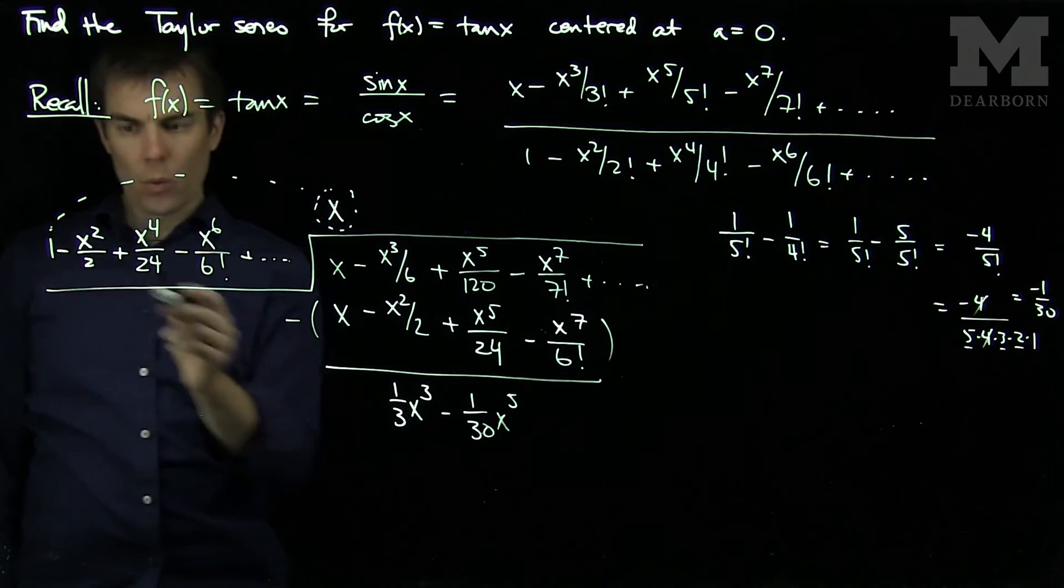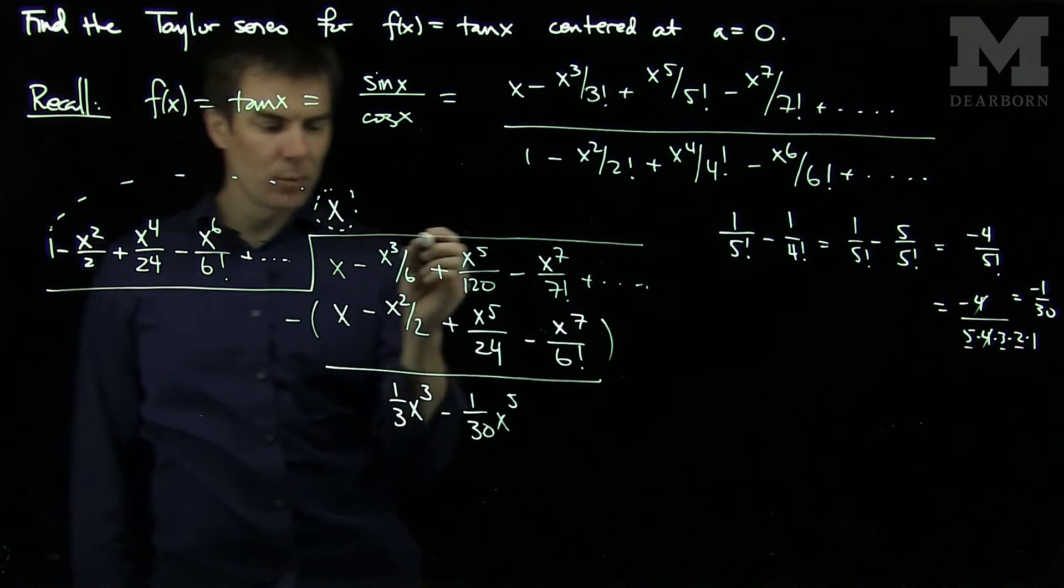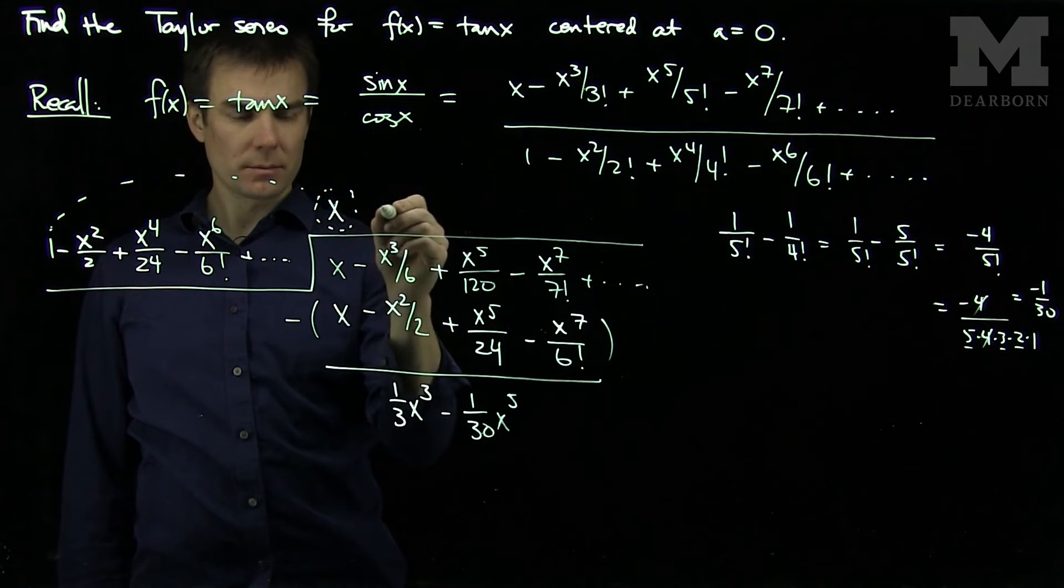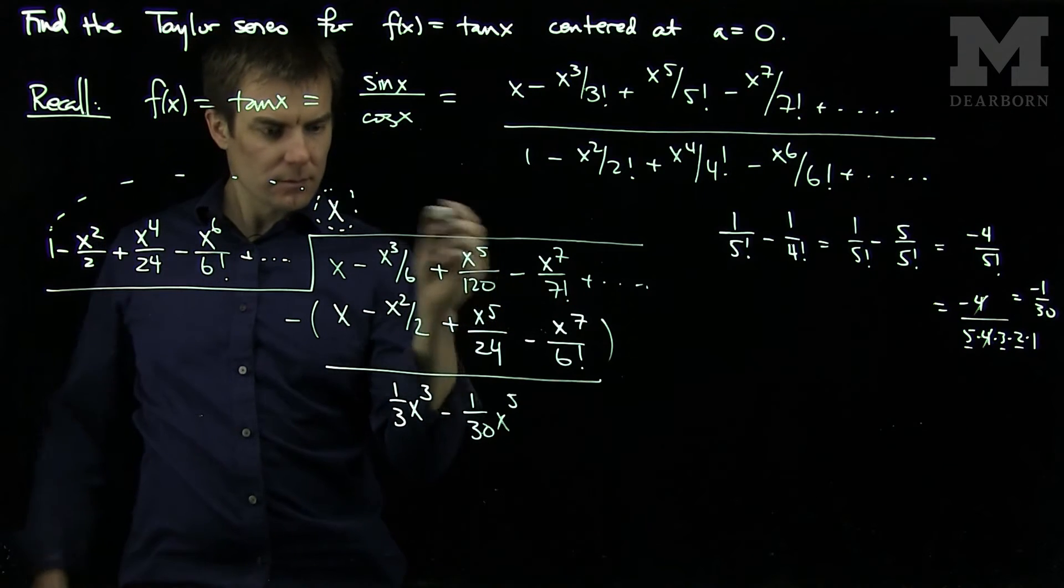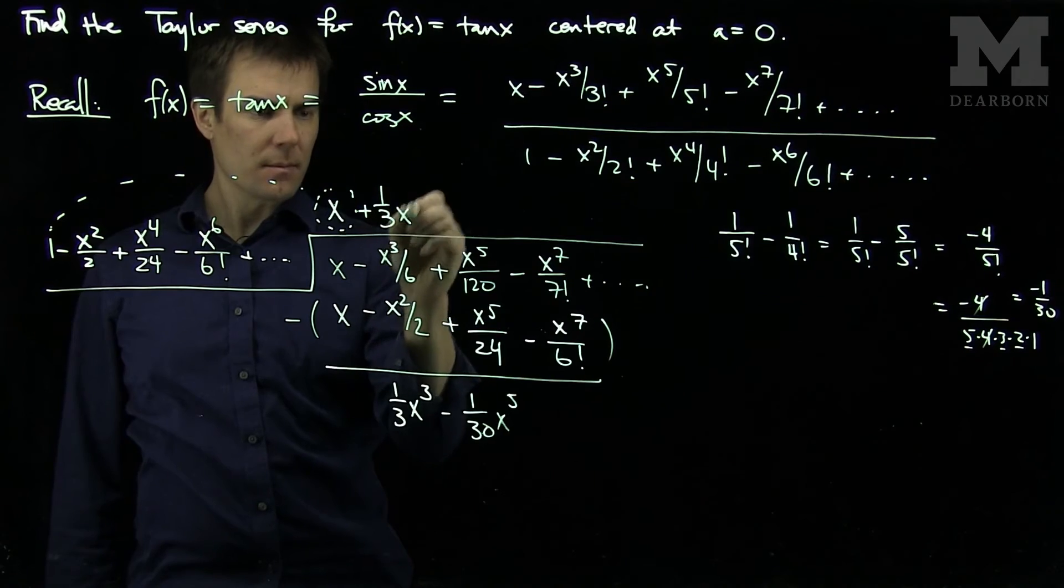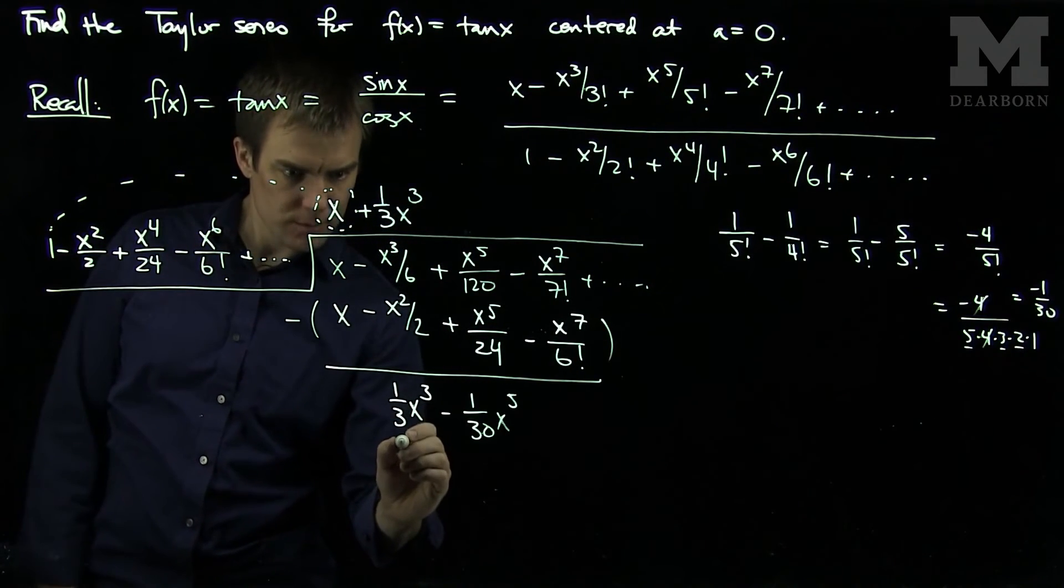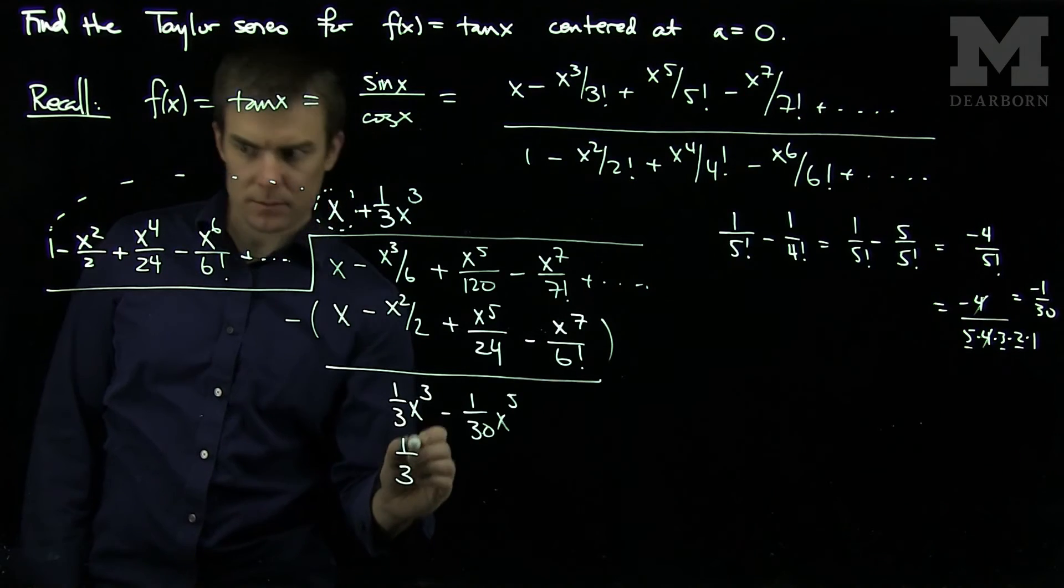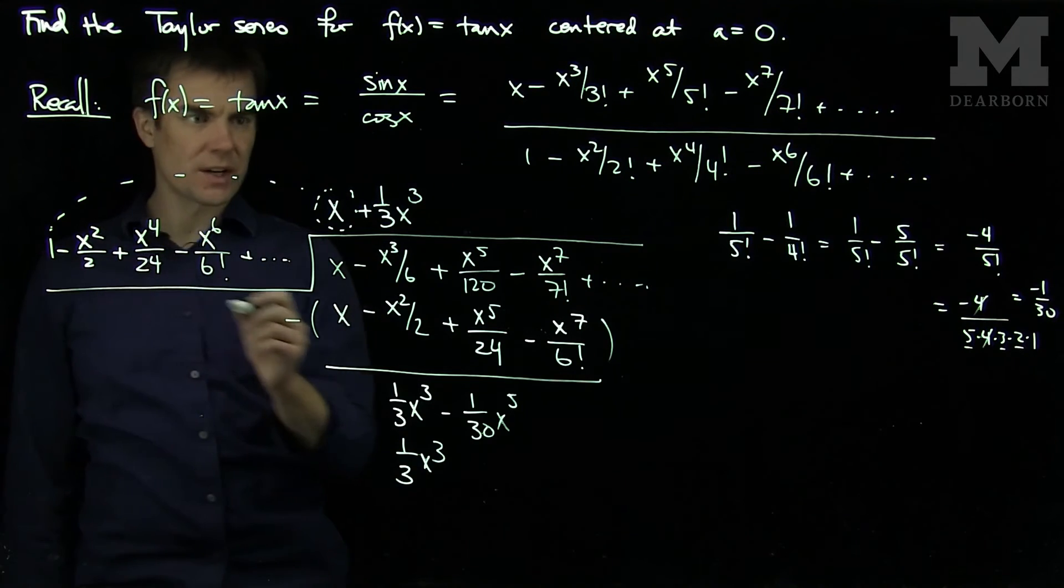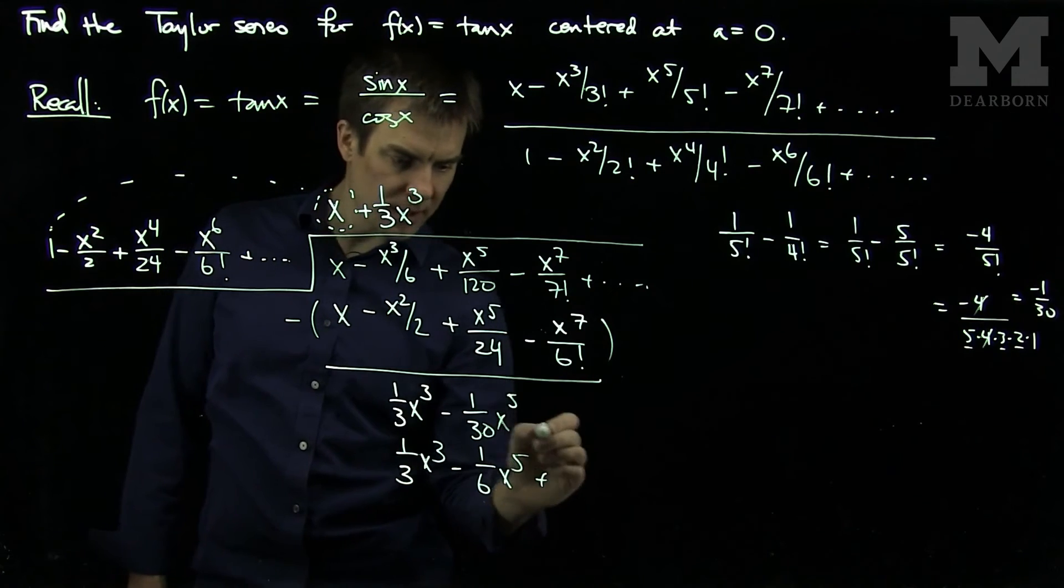And now we do the next step. So what do I need to multiply 1 by to get this 1 third x cubed? I need to multiply that by 1 third x cubed. And now that's going to be a positive sign. And if we do this, we'll get 1 third x cubed. Then I will have 1 over 6 x to the 5th power, et cetera.